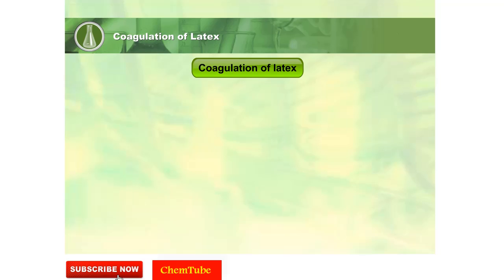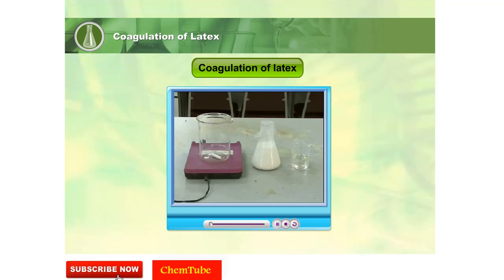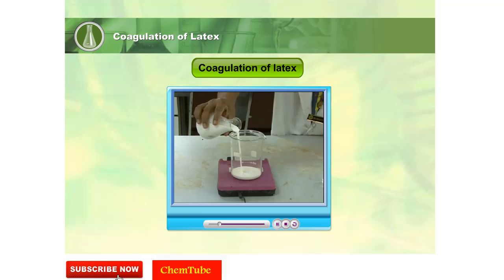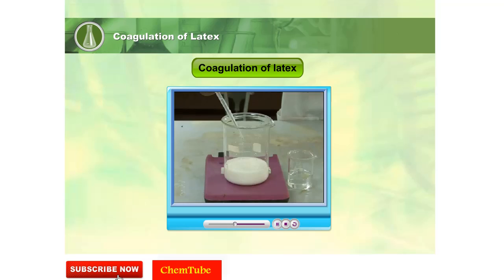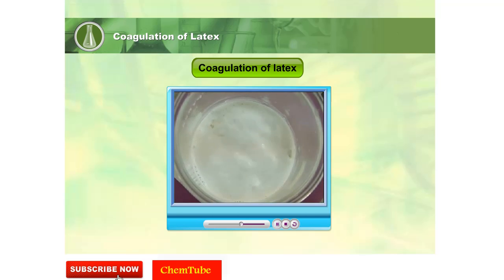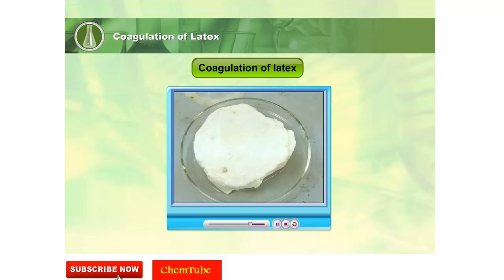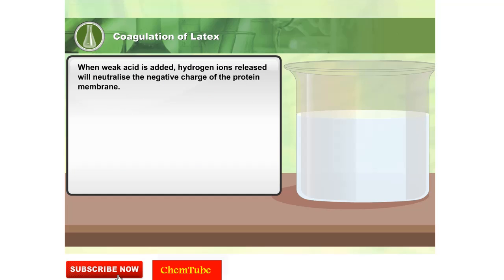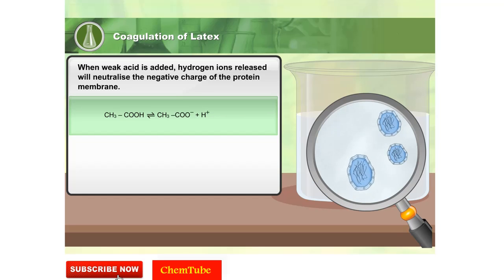Let us do an experiment to check what happens to latex during coagulation. Take a beaker containing latex, then add acid to the beaker. After some time, we can see the latex coagulates. When weak acid is added to latex, it coagulates because the hydrogen ions released will neutralize the negative charge of the protein membrane.